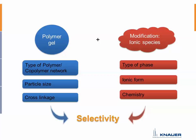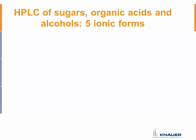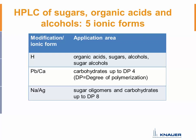We offer five different ionic forms of these columns. You can choose the ionic form based on your application area. If you want to analyze organic acids, sugars, alcohols, and sugar alcohols — or even mixtures of all these substances — you have to use a polymeric column with the ionic form H. This would be the perfect one to characterize all these analytes.